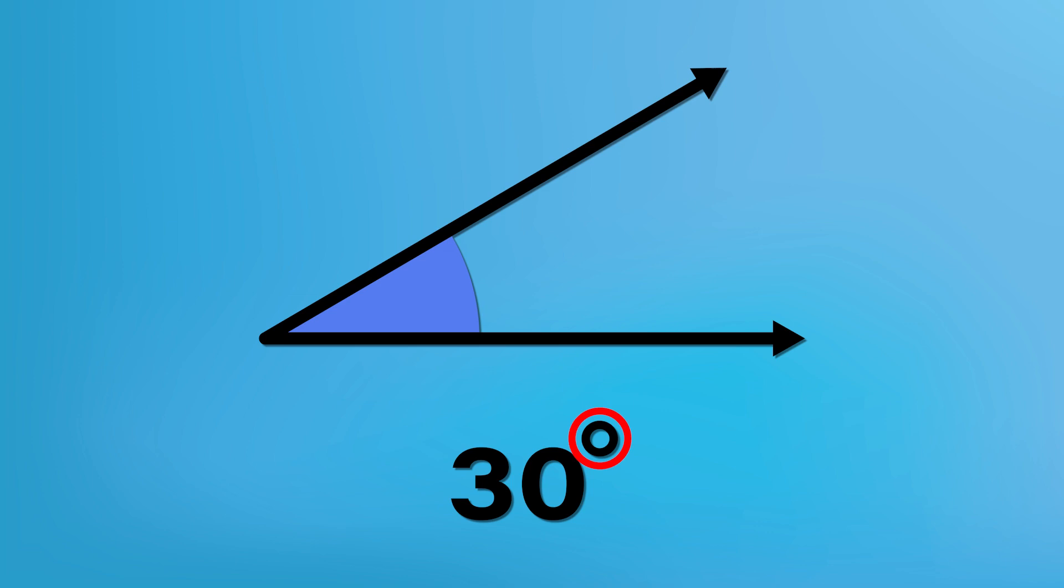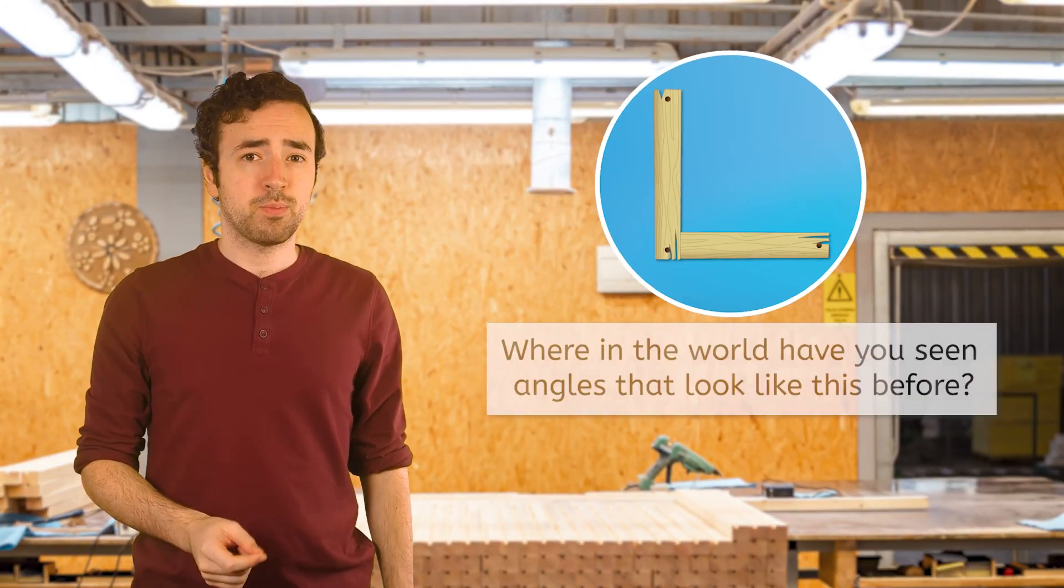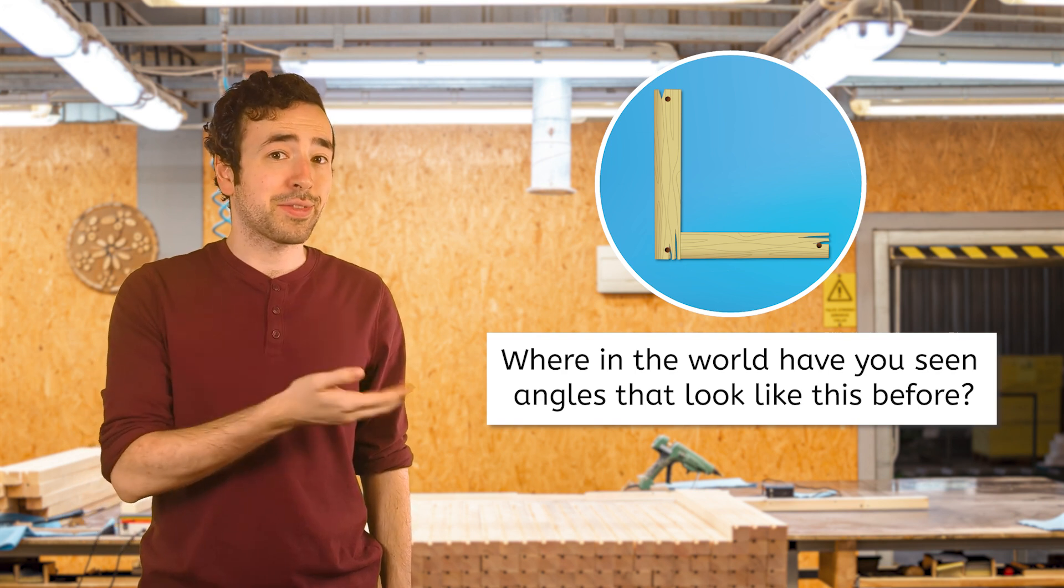Angles are measured in degrees using this circle symbol. The angle highlighted here, for example, is 30 degrees. This next angle is special. Where in the world have you seen angles that look like this before?